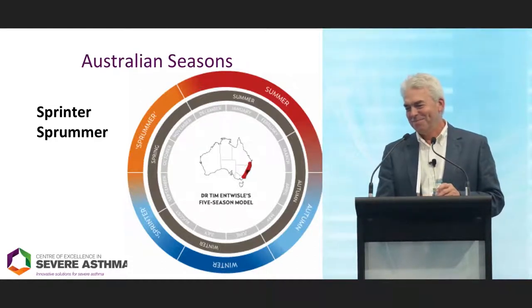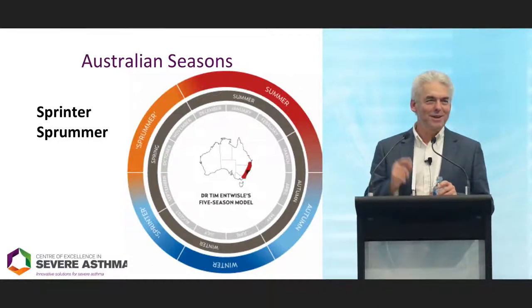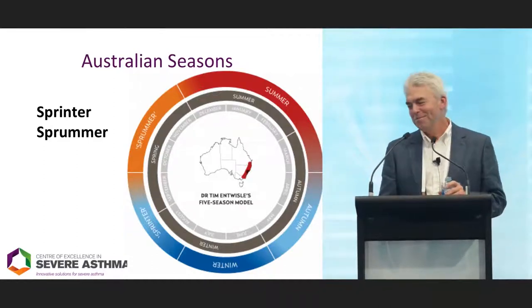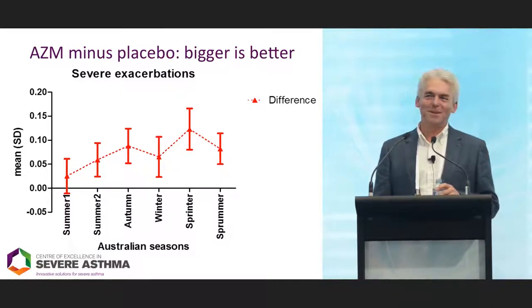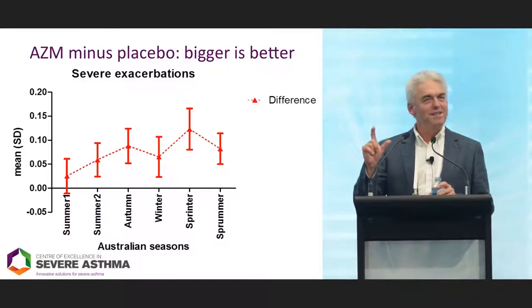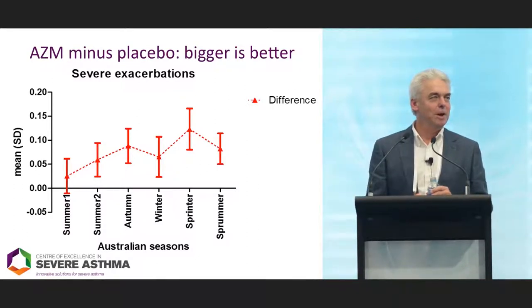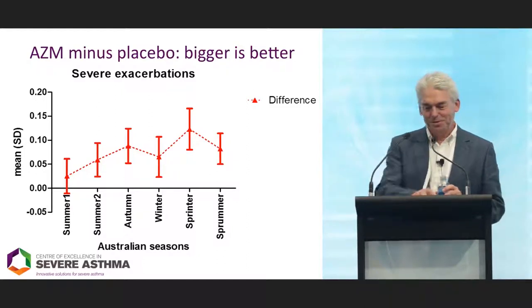The answer is that there's not enough here to say winter alone is sufficient. Sprinter — maybe. Or you could flip it and say if you're going to use it episodically, you probably don't need it in summer, but the rest of the year you do.